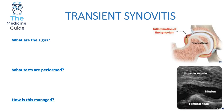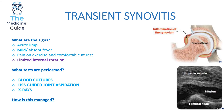Looking at transient synovitis — this is inflammation of the synovium, the lining of the joint capsule. There will be an acute limp, similar to septic arthritis. However, transient synovitis is not necessarily an emergency situation whereas septic arthritis is a life-threatening emergency. In transient synovitis the child will have a mild or absent fever, whereas in septic arthritis the child will have a very, very high fever. In transient synovitis the patient will be in pain only on exercise and comfortable at rest, whereas in septic arthritis the child is in pain both at rest and during exercise.